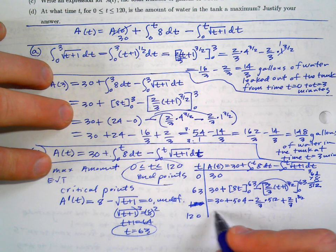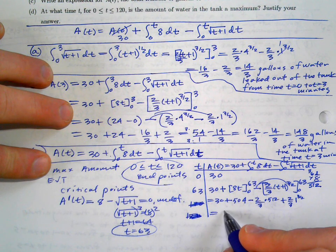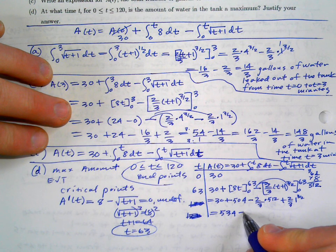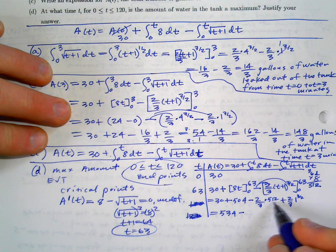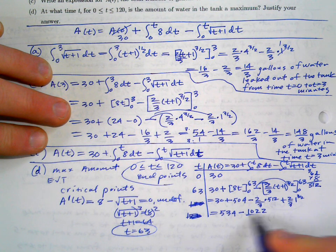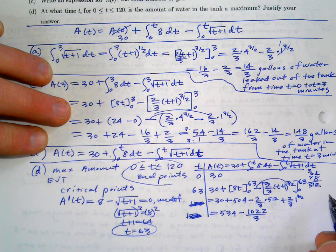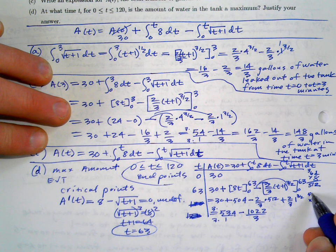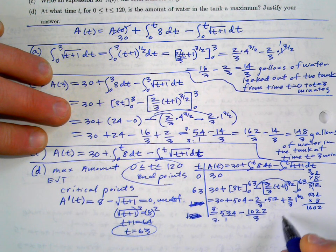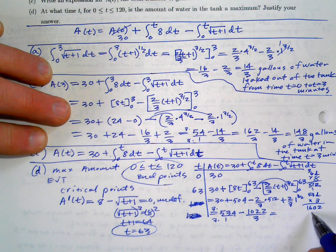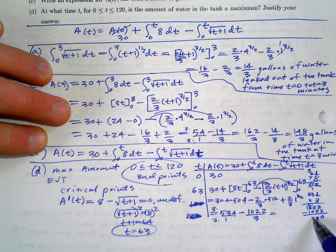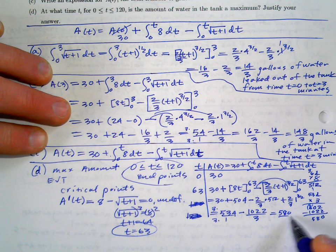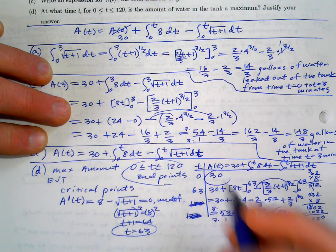That gives us 30 + 504 − [(1024/3) − (2/3)] = 534 − 1022/3. Converting 534 to thirds: 1602/3 − 1022/3 = 580/3. So A(63) = 580/3.